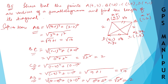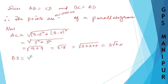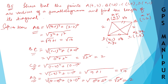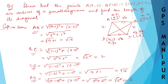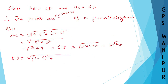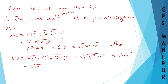Now we need to find BD. B is (1,2) and D is (4,1). Taking (x1,y1) and (x2,y2): BD equals root over (1 minus 4) squared plus (2 minus 1) squared, which is root over (minus 3) squared plus 1 squared, giving root over 9 plus 1 equal to root 10. So the diagonals are AC equals 3 root 2 and BD equals root 10.